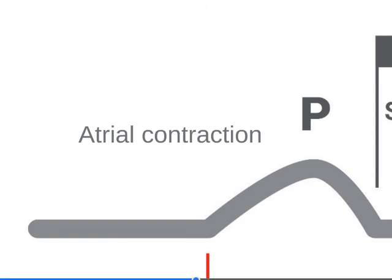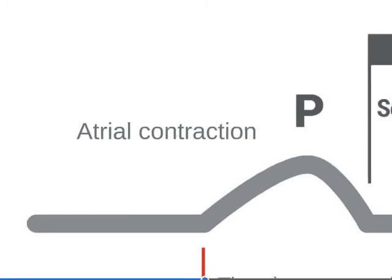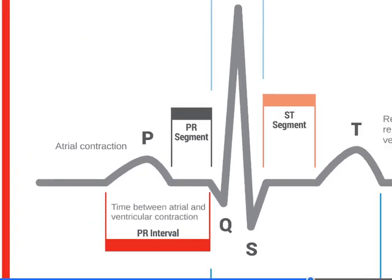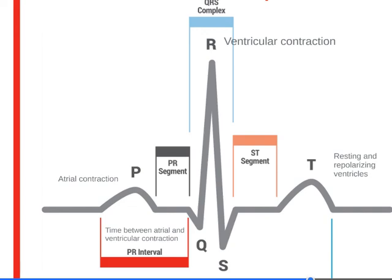When blood enters the atria of the heart, an electrical impulse is sent out from the SA node and conducts through the atria, resulting in atrial contraction. This impulse then travels to the AV node, which in turn sends out an electrical impulse and travels through the bundle branches and the Purkinje fibers of the ventricles, resulting in ventricular contraction. The time between atrial and ventricular contraction registers on an ECG strip as the PR interval, while the ventricular contraction registers on an ECG strip as the QRS complex.